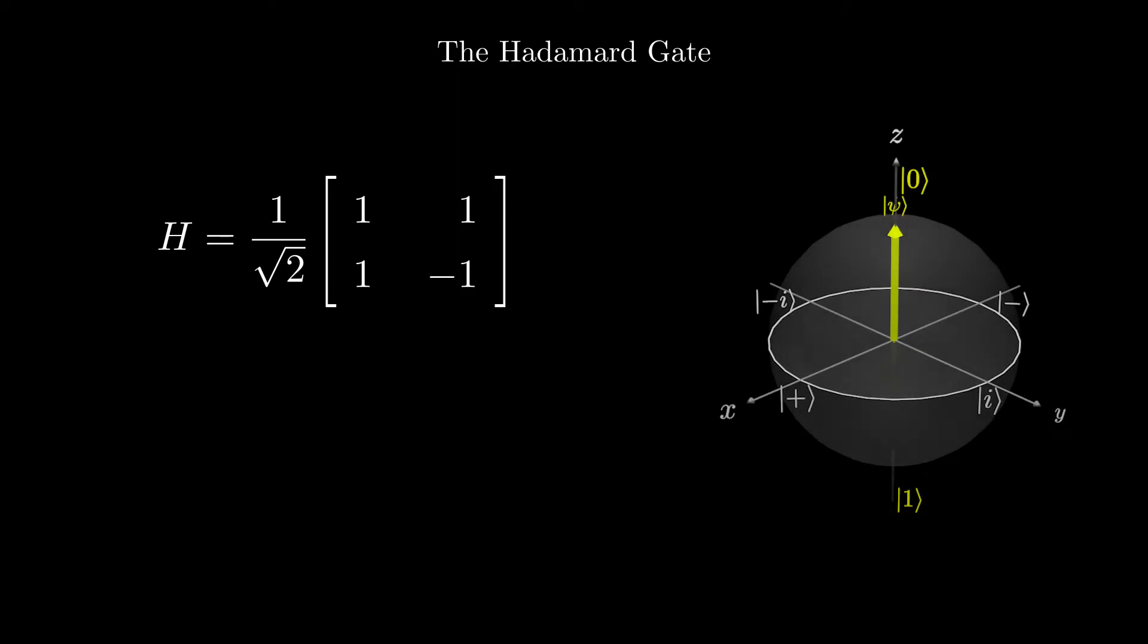Now let's look at the Hadamard gate. Here is the matrix for the gate. If we look at how the gate acts on a qubit on the Blocksphere, we see that the zero state gets transformed into the plus state, and the one state gets transformed into the minus state.